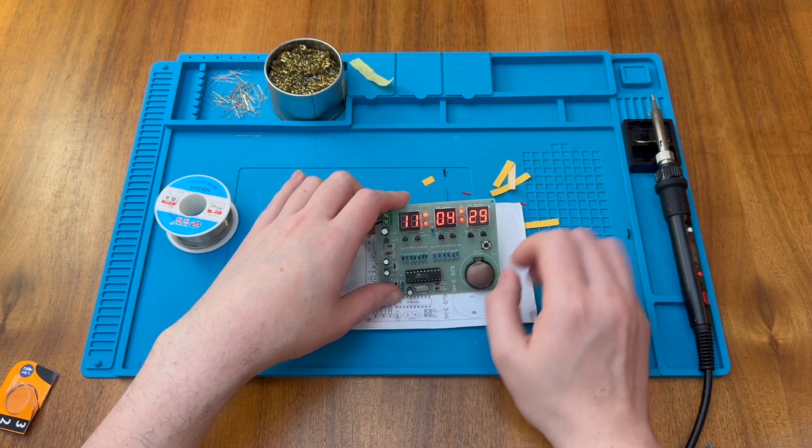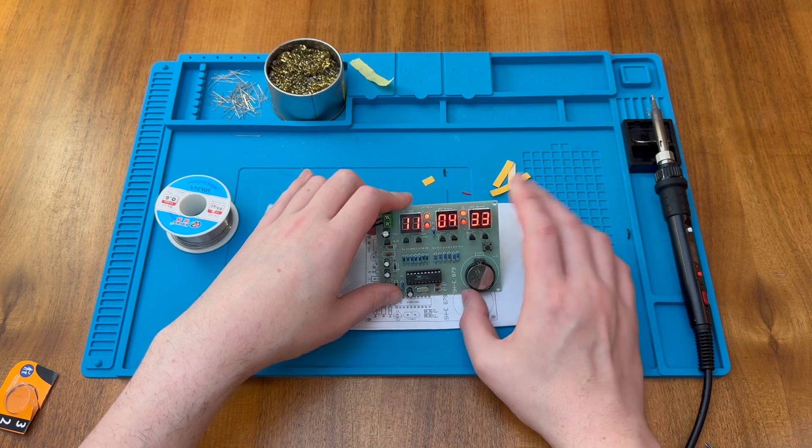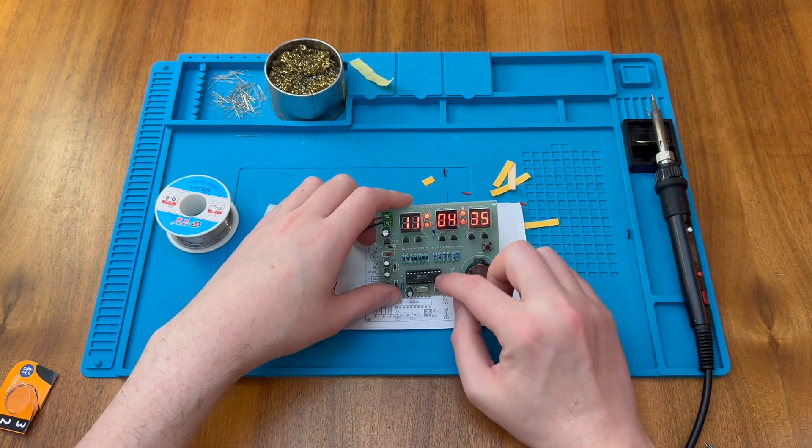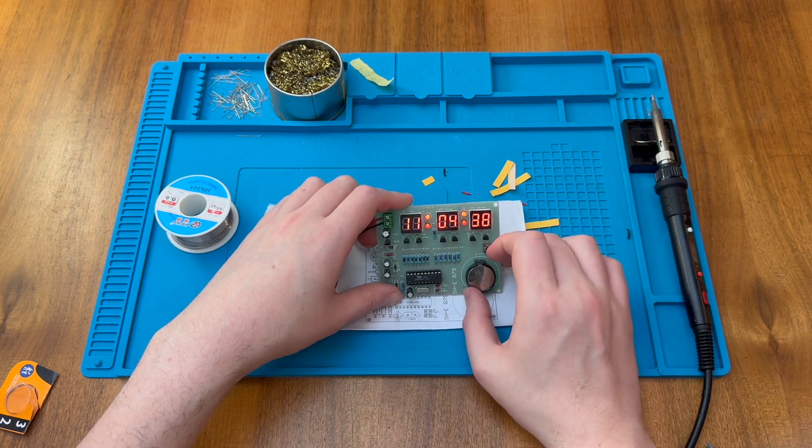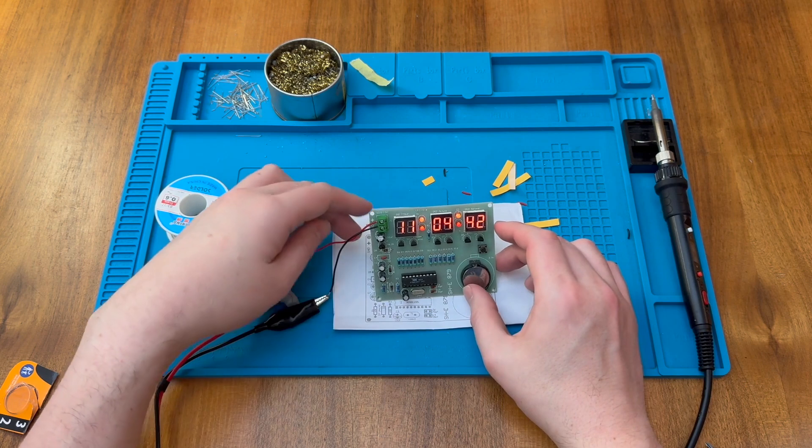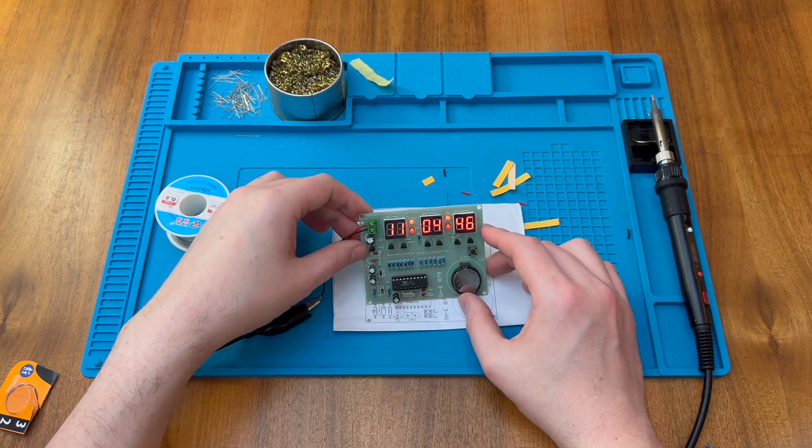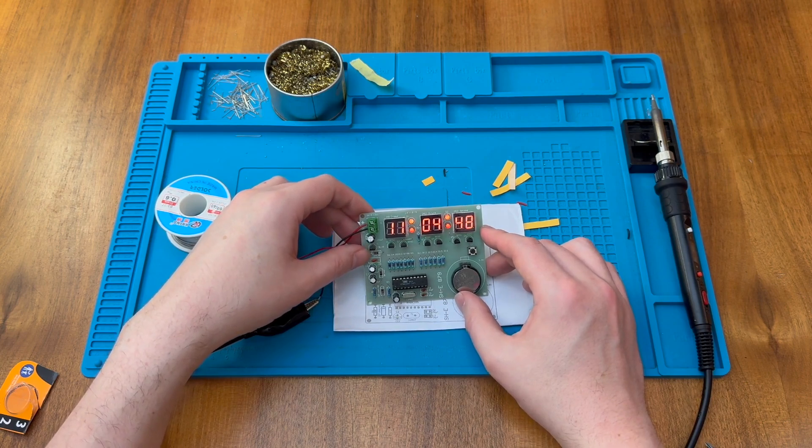This clock does appear to be working and it should keep reasonable time, assuming it's using the clock crystal here. Probably not precise. Usually there's a separate 32.768 kilohertz clock crystal, which is used for timekeeping, even on microcontrollers. I'm not sure if this is a dedicated clock chip or if it's a microcontroller, but I think it's a regular microcontroller. So there we have it. I hope you thought this project was as interesting as I did, and I hope to see you in the next video.